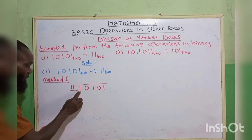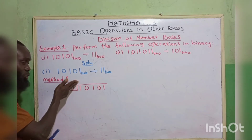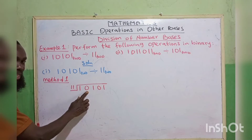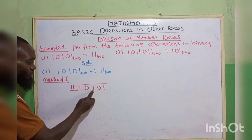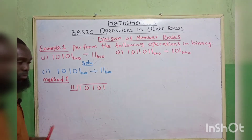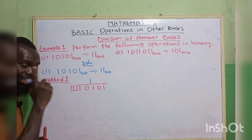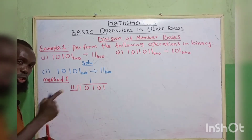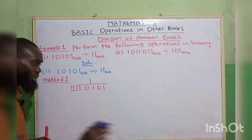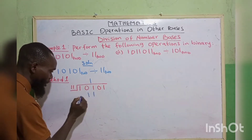Now, 11 goes in 1 — it's impossible. We write 0 but since we are just starting, we don't need to write 0 yet. Journey with this one making 10. 11 goes in 10 — it's impossible. Journey with this one making 101. 11 goes in 101 — it can go. We say it is 1. Even though it goes more than once, we only write 1 because we are working in base 2. The answer can either be 1 or 0. Now, 11 times 1, we have 11. We subtract.